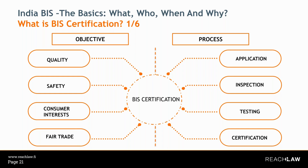The BIS certification process has four broad steps: first, application preparation and submission with company and product-specific information; second, factory inspection where the manufacturing facility is audited for compliance with the standard; third, product testing where samples withdrawn during inspection are tested in a BIS-approved lab; and fourth, grant of license upon compliance, after which the ISI mark and license number can be used on products.